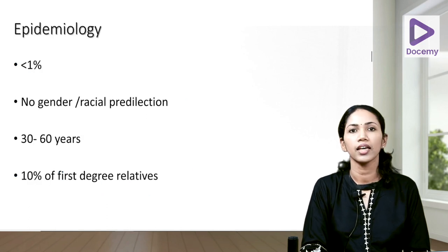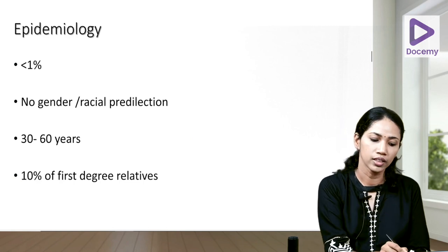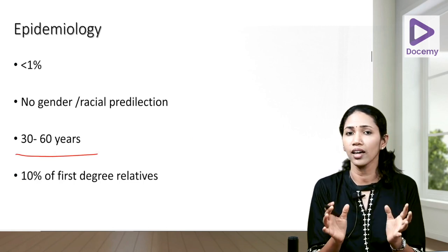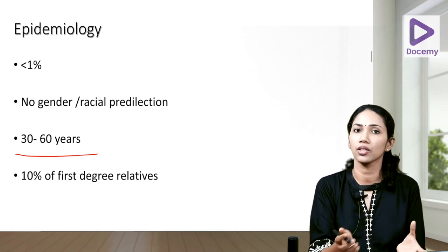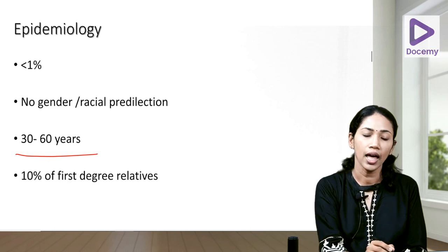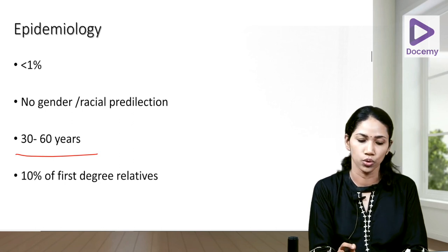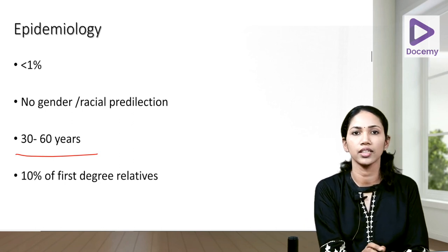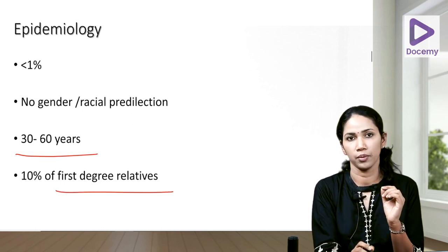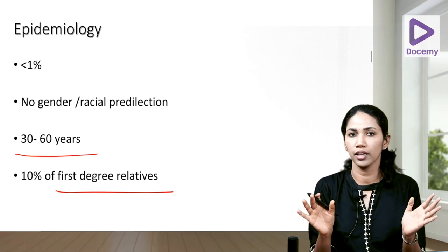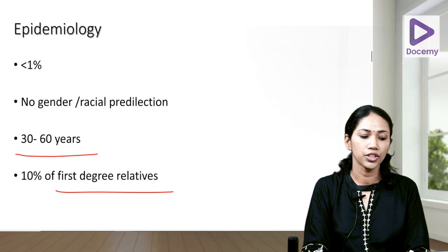Coming to the epidemiology, it is a disease mostly affecting adults in the age group of 30 to 60 years. It affects less than one percent of the population. There are cases of childhood lichen planus also, but mostly it occurs in the 30 to 60 age group. There are no racial or gender predilections for the disease.